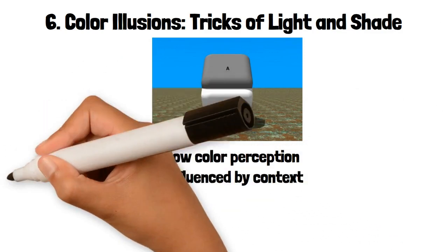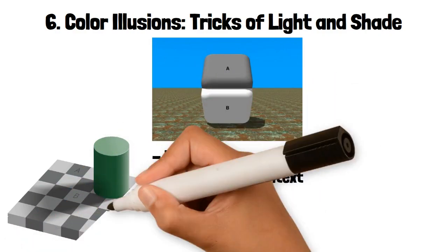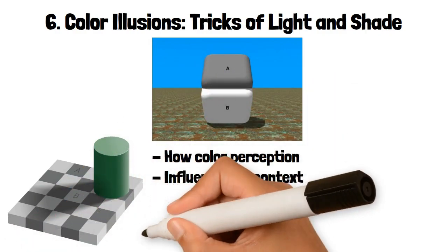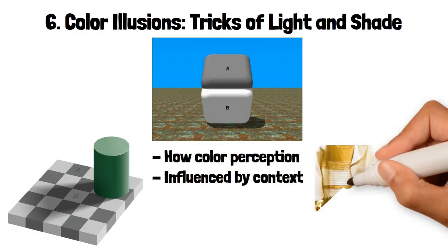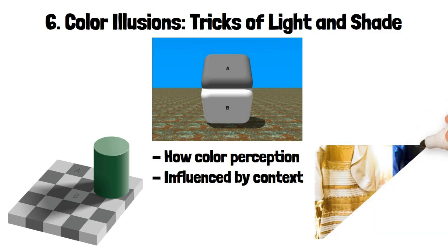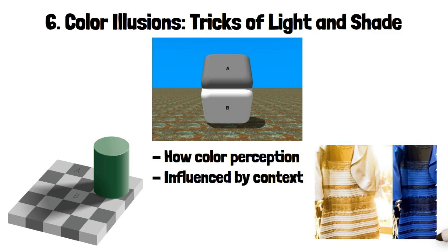One famous example is the Checker Shadow Illusion, where two squares on a checkerboard appear to be different shades of gray due to the shadow cast by an object, even though they are actually the same color. Another is the Dress Illusion, where an image of a dress appears to be different colors, blue and black or white and gold, to different viewers due to the lighting in the photograph.